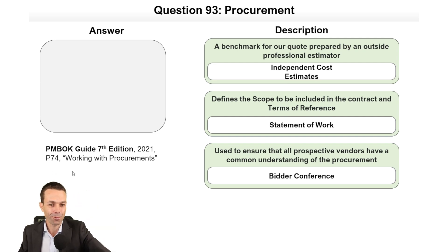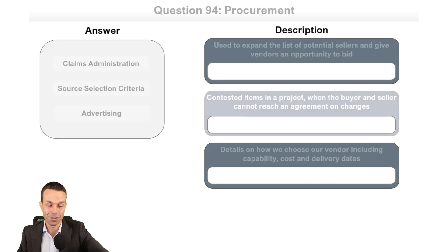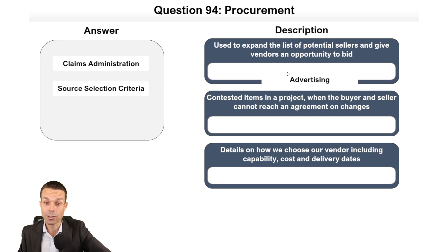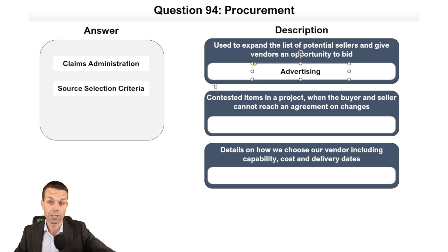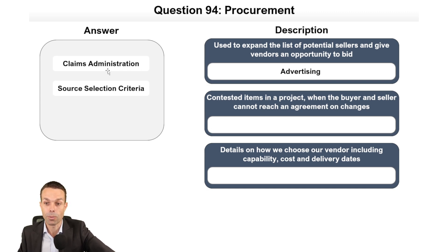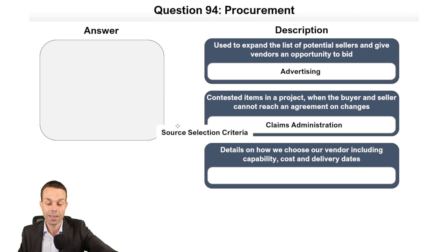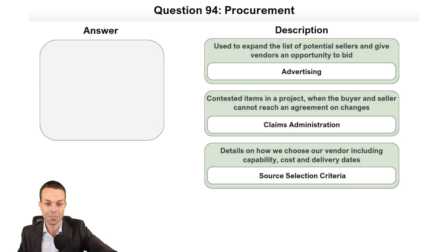More procurements: to expand the list of potential sellers, especially for government contracts, we advertise the opportunity so all vendors have a chance to bid. Contested items where the buyer and seller can't agree on changes are handled through claims administration. Details on how we choose our vendor including capability are captured in our source selection criteria. All confirmed correct.